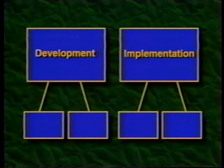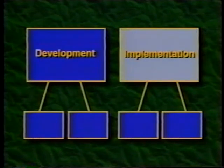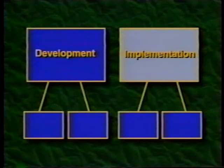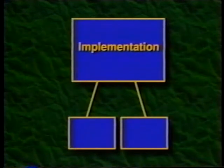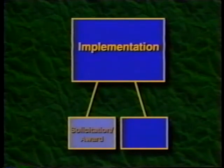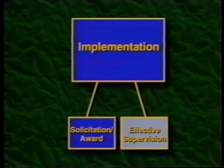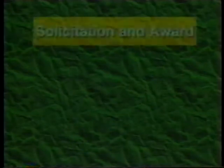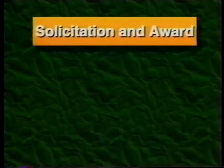Creating a contract maintenance program involves two phases: development and implementation. Development was covered in the previous program. In this program, we will look at implementation. It includes solicitation and award procedures and effective supervision of the contract. There are five components to the solicitation and award stage.